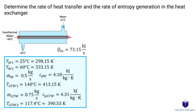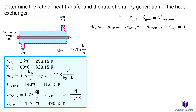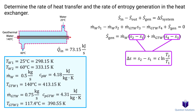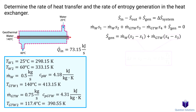Now let's figure out the entropy generation by writing an entropy balance equation for the whole heat exchanger as our system. There is no heat transfer to or from the surroundings. For the water pipe, we have mass flow in and out; for the geothermal pipe, we also have mass flow in and out. Adding entropy generated and setting the change equal to zero (steady flow), we isolate for entropy generated. Since both fluids are incompressible substances, we use the entropy change equation for solids and liquids.